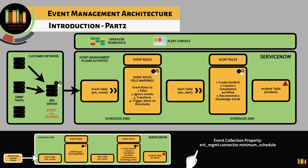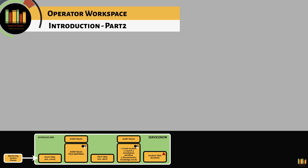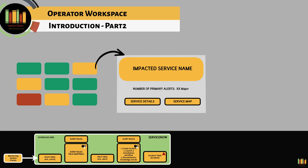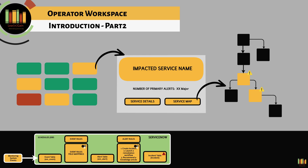There are multiple scheduled jobs that run in the background to pull events, execute event rules, execute alert management rules, perform impact calculation, update service maps, and so on. The operator workspace is one of the key components where users can view the health of their application services. Each service will be associated with a primary alert and may or may not contain secondary alerts. The services within the operator workspace can be grouped or sorted by various options.